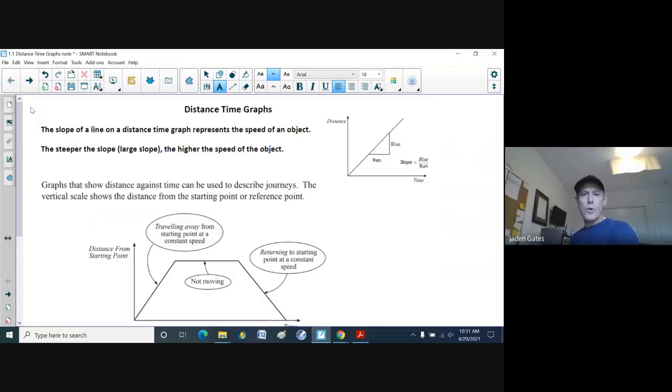All right, so we're continuing on with looking at velocity, speed, distance, and displacements. And what we're going to specifically look at right now is distance time graphs. Now, when you have a graph, you can actually find the speed when you have a distance time graph by finding the slope.